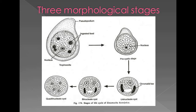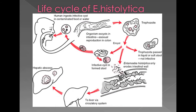From the uninucleate cyst, nuclear material divides from one to two, forming a binucleate cyst. The two nuclei further divide into four, forming the quadrinucleate cyst. This quadrinucleate cyst is the infective form for humans. Infection occurs by ingestion of the quadrinucleate cyst through contaminated food and water. In the small intestine, it excysts to a quadrinucleate trophozoite, which divides further to form eight trophozoites from one cyst.